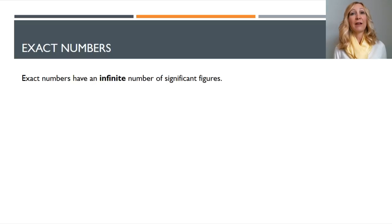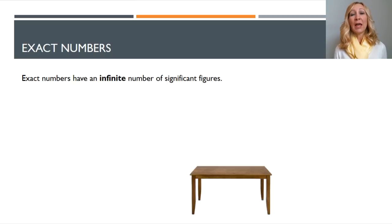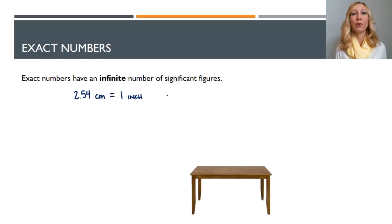Now, exact numbers have their own rules for counting significant figures. Exact numbers have an infinite number of significant figures because you know that is an exact amount. So when you have an exact number in your calculation, you can just ignore it when counting significant figures and move on to the next one. Examples of exact numbers are counting numbers — for example, this table has four legs: one, two, three, four. I know it has exactly four legs, so if I need to do math with the number four, it has an infinite number of significant figures.